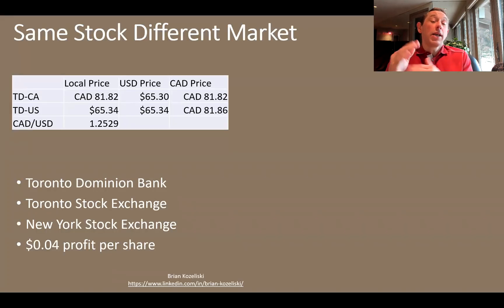One thing you might be able to do is say, well, you know, there are some stocks that trade in multiple markets. So for example, Toronto Dominion Bank trades on the Toronto Stock Exchange and it trades on the New York Stock Exchange. So we can see here that in Toronto, it has a price of $81.82. In the U.S. that's a price of $65.34. Current exchange rate is $1.2529.